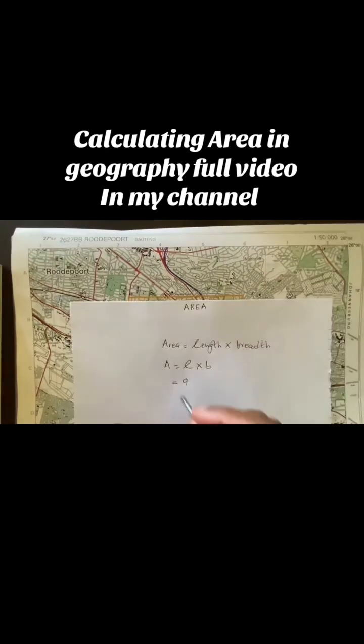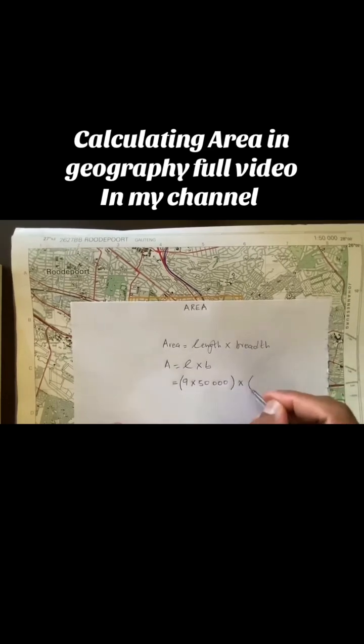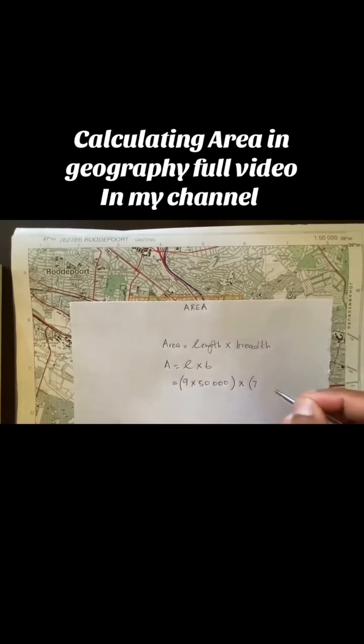From here, we can work everything. So this is 9, this will be 9 times 50,000, which is the scale for your length, times our breadth was 7 centimeters, and I'll multiply that with 50,000.